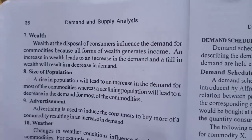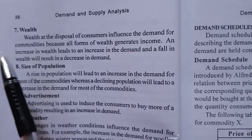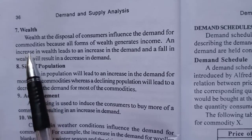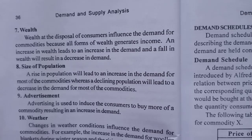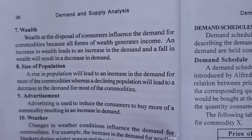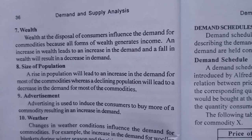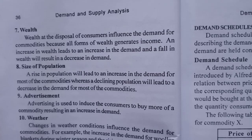The seventh determinant is wealth. Wealth at the disposal of consumers influences demand for commodities because all forms of wealth generate income. If wealth increases, then demand increases.